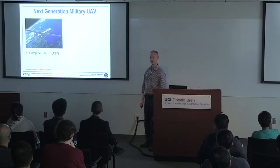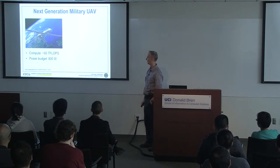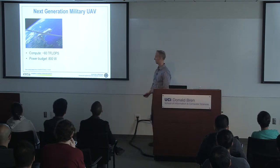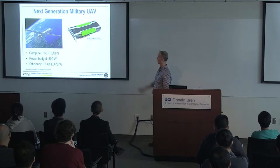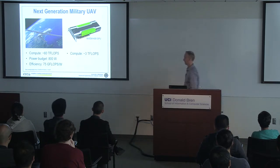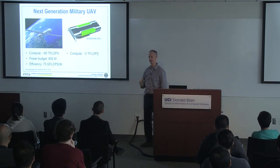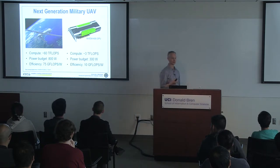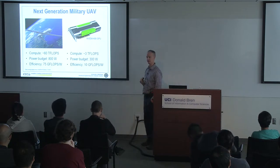The compute required was about 60 teraflops, with a power budget of 800 watts — giving an efficiency of about 75 gigaflops per watt. Comparing to the off-the-shelf K80 GPU of that era, you get about 3 teraflops at 300 watts, which is roughly 10 gigaflops per watt. So we're about a factor of eight short on paper, and probably a factor of 10 to 15 short in practice, given that real GPU utilization is a fraction of peak.